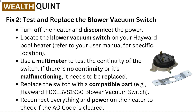Fix 2: test and replace the blower vacuum switch. Turn off the heater and disconnect the power. Locate the blower vacuum switch on your Hayward Pool Heater — refer to your user manual for the specific location. Use a multimeter to test the continuity of the switch. If there is no continuity or it's malfunctioning, replace it with a compatible part such as the Hayward FDXLBVS1930 blower vacuum switch. Reconnect everything and power on the heater to check if the AO code is cleared.